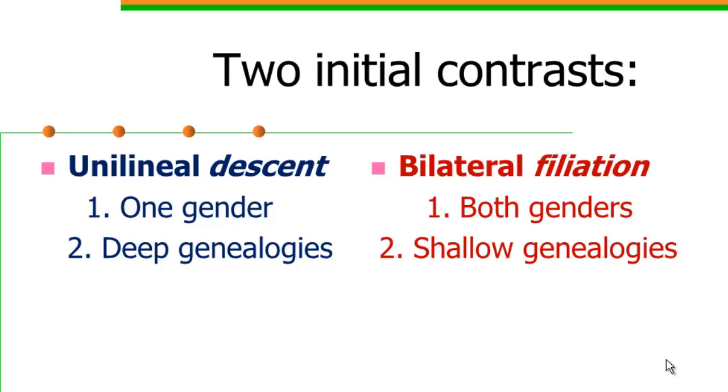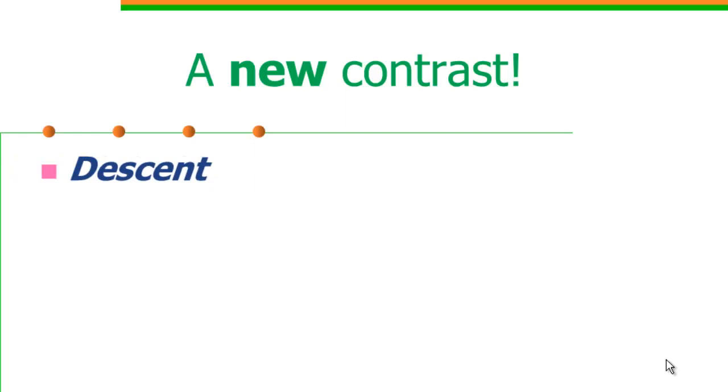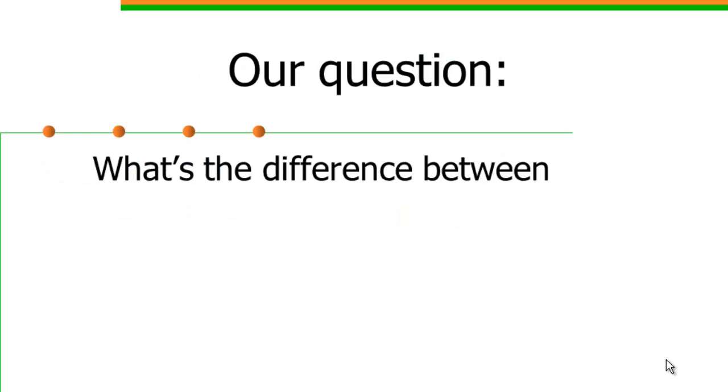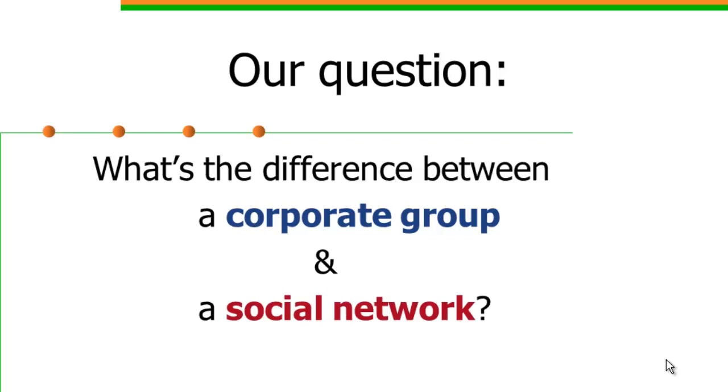Now we're going to make a new contrast, and this relates to their social results. So here we're going to stress what Meyer Fortes stressed, and that's the association between descent and corporate groups. Affiliation, on the other hand, is associated with a social outcome that we call a network. So the question we're going to pursue right now is just what's the difference between a corporate group and a social network.